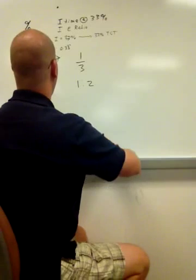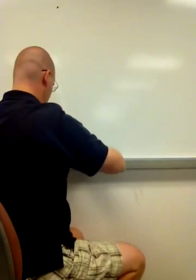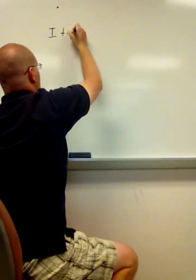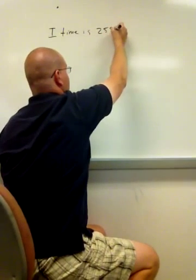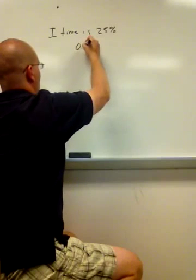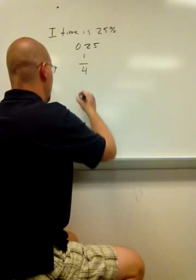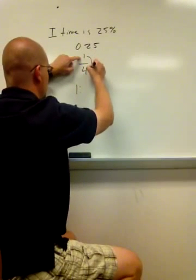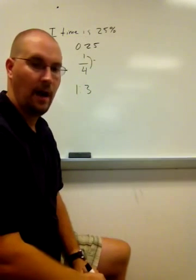Let's try it with another percentage. Let's say that my I time is 25%. So the decimal of 25 is 0.25, which is 1/4. That gives me an I to E ratio of 1 to, 4 subtract 1 is 3, 1 to 3 I to E ratio.